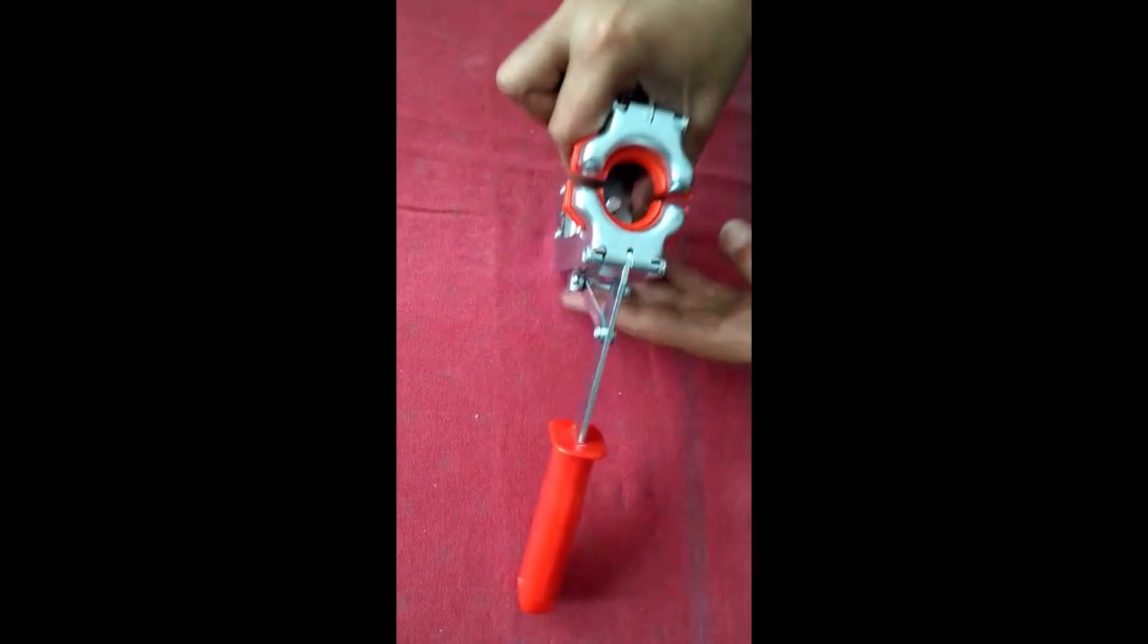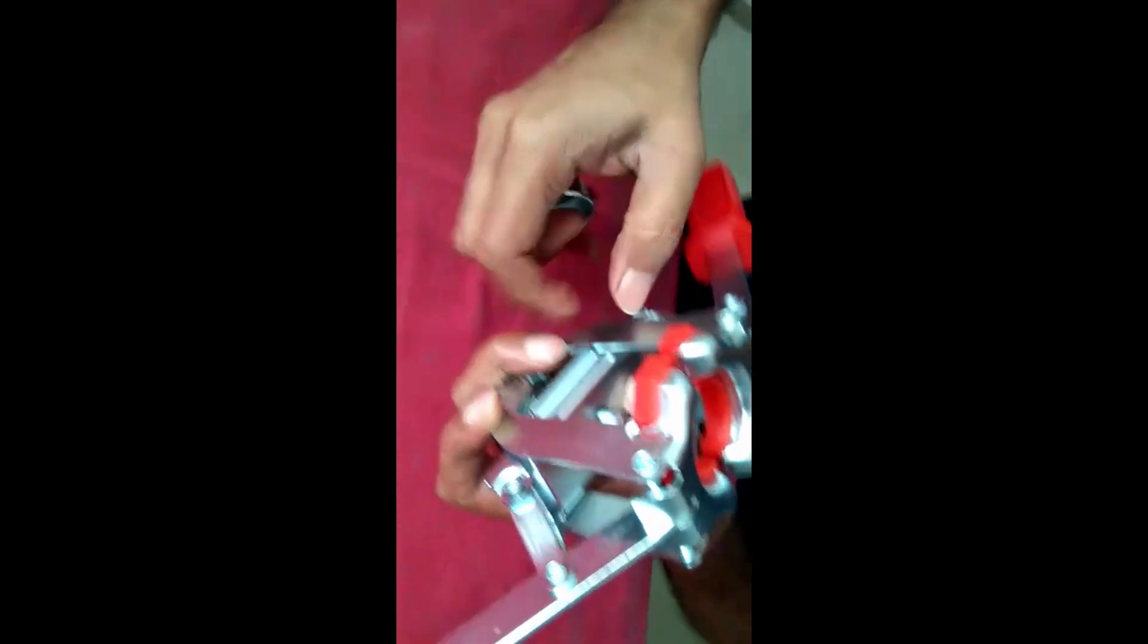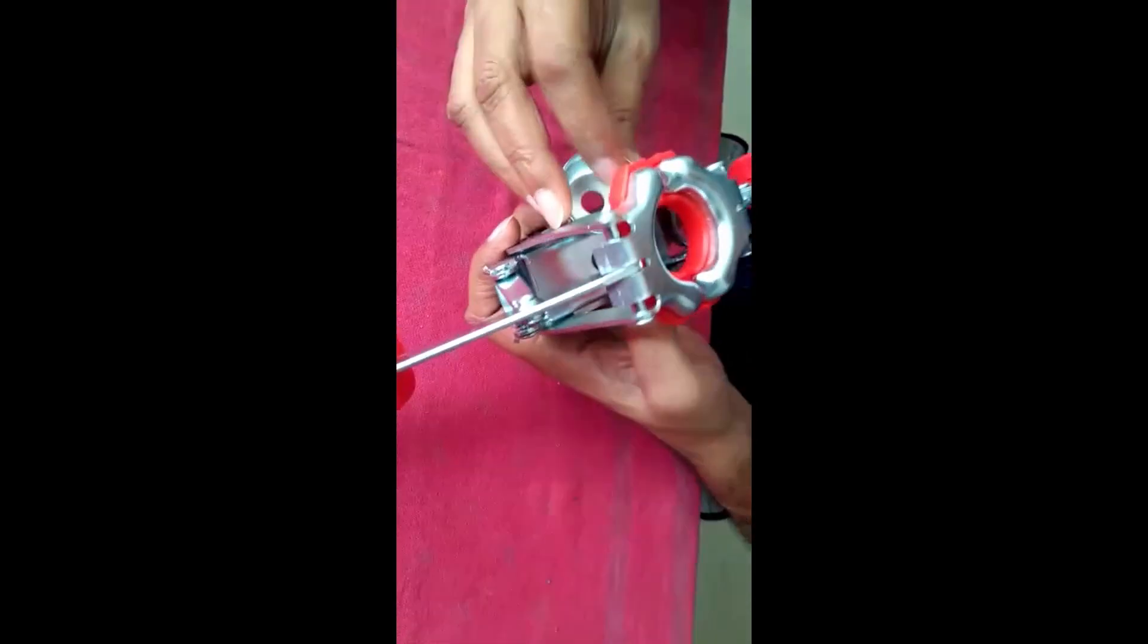However, for sauce bottles you would need a 28mm bell, and for slender bottles you would need a 24mm bell. Today we are going to show how this bell can be replaced and reattached.